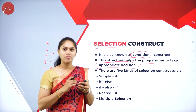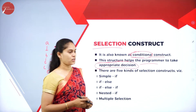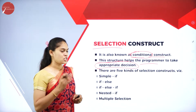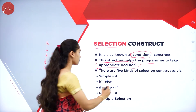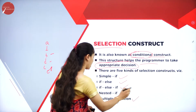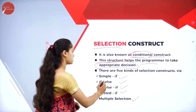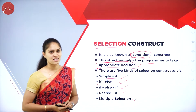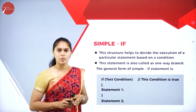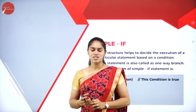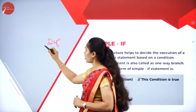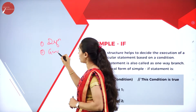The if-else statement is also called two-way branching. Based on a condition, it decides which set of statements to execute. If the condition is true, statement 1 executes; if false, the else part executes statement 2. For example: if I get a seat in a college, I go there; otherwise I go to another college — two alternatives.